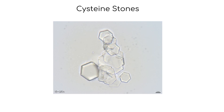Cystine stones are caused by a condition known as cystinuria, which results from secretions of cystine in the urine. Cystine can then form stones. Here is a picture of cystine crystals in urine.